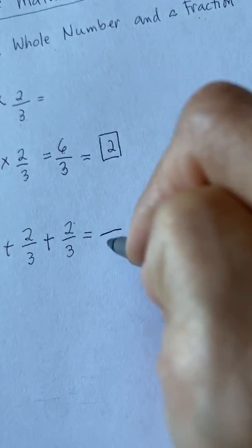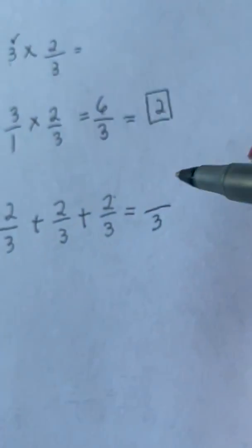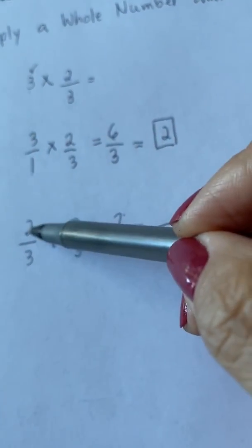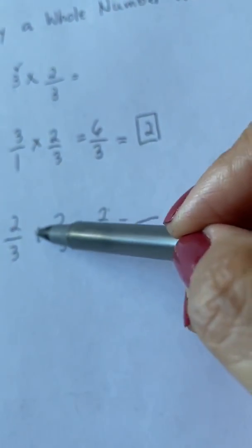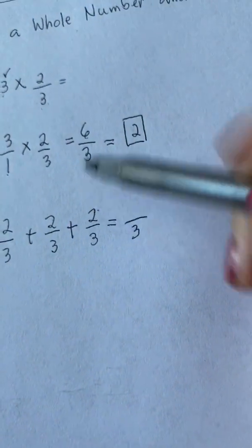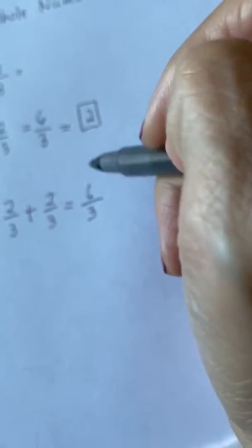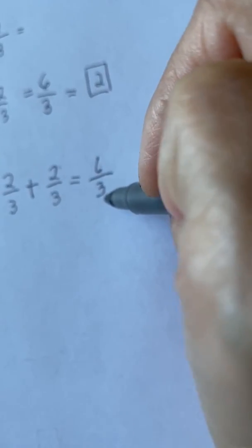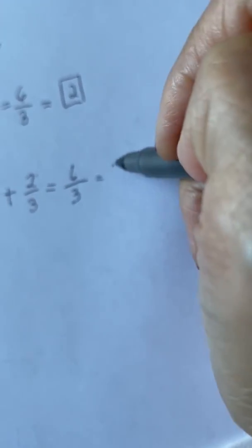So in this example, we have 3 as the common denominator. Write it down. All you have to do is to add the numerator. So 2 plus 2 is 4 plus 2 is equal to 6. Again, 6 divided by 3 is equal to 2.